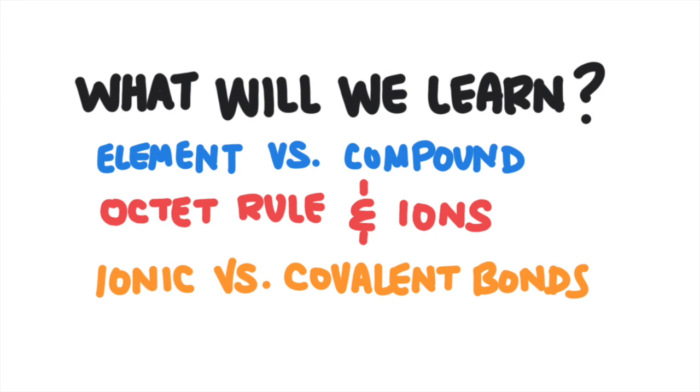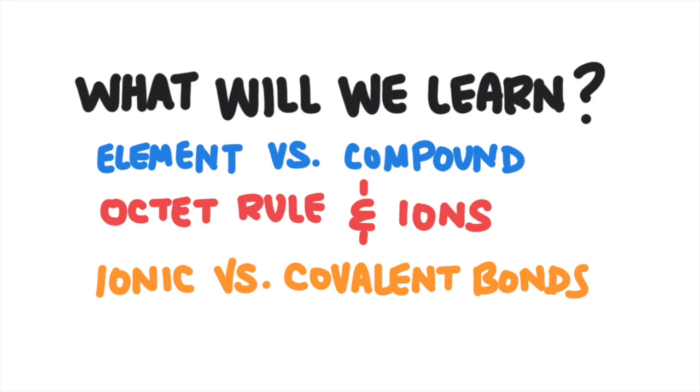So what are we going to learn in this video? First we'll learn about the octet rule. We will learn how elements form ionic bonds, and then we will learn how elements form covalent bonds.